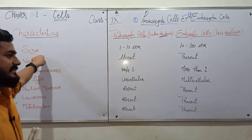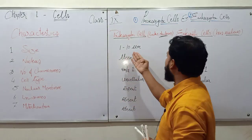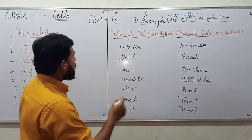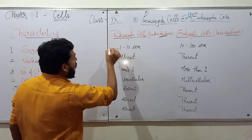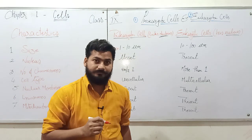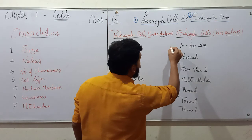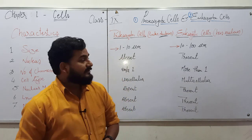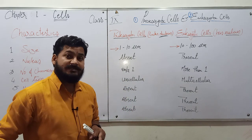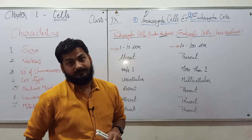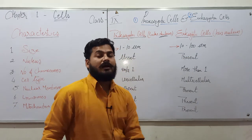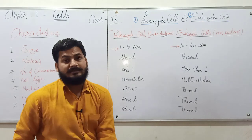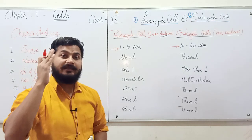Size greatly varies between prokaryotic and eukaryotic cells. The size of a prokaryotic cell is hardly 1 to 10 micrometers, while in the case of a eukaryotic cell this ranges from 10 to 100 micrometers. This means there is a difference of 10 times in the size of the cell — 1 to 10 micrometers versus 10 to 100 micrometers.